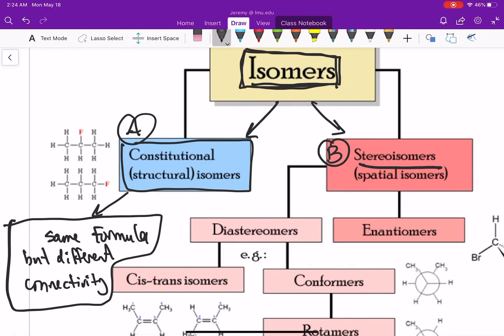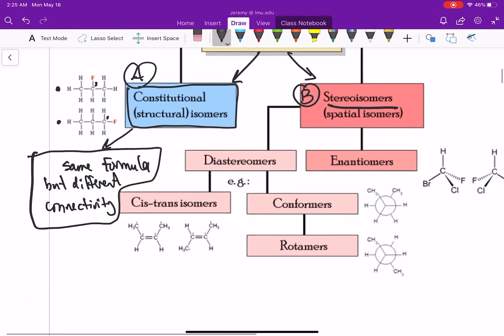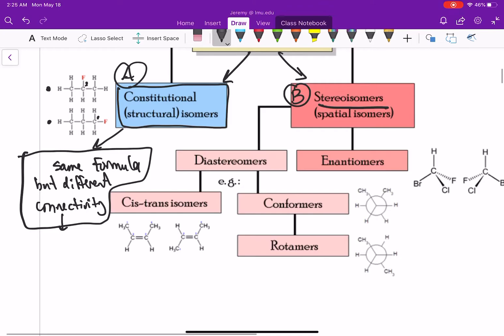If we look here, we have a compound where our fluorine is found on carbon one. And in this compound, it's found on carbon two. So the structure at the bottom would be one fluoropropane, and the structure on the top would be two fluoropropane. When they have a different connectivity, they definitely have different names, they always have different names.